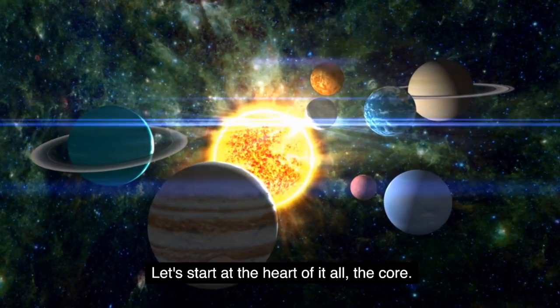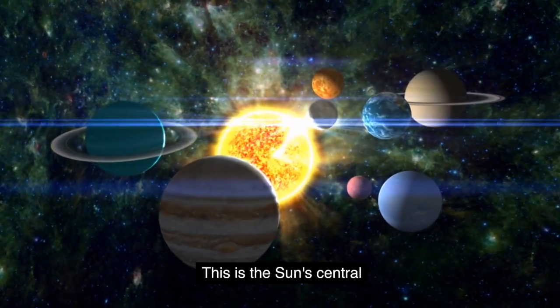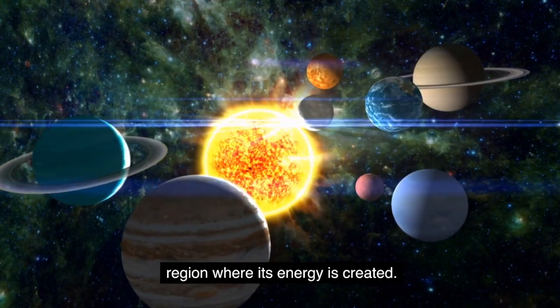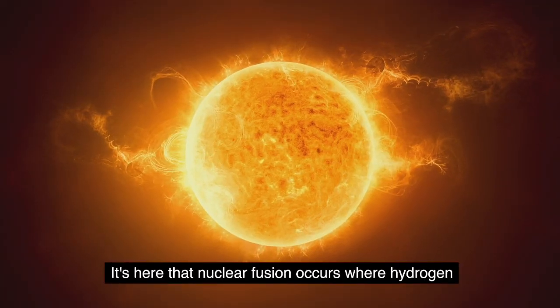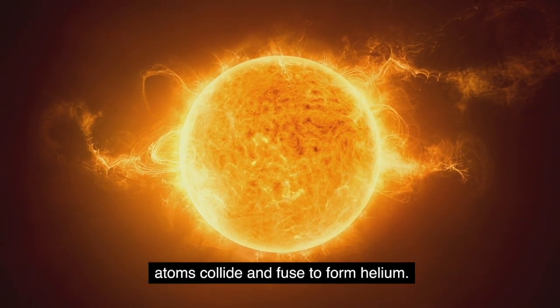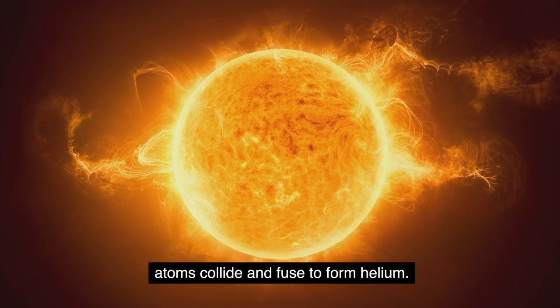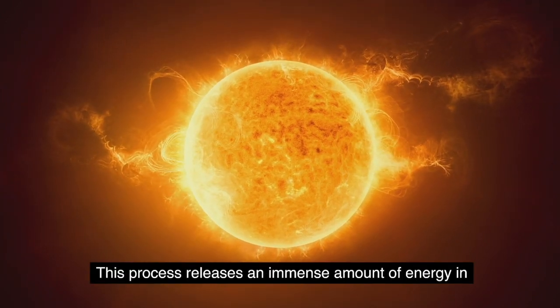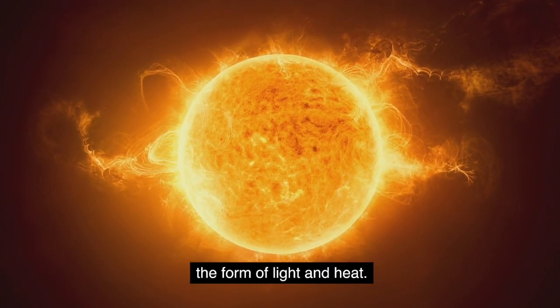This is the sun's central region where its energy is created. It's here that nuclear fusion occurs, where hydrogen atoms collide and fuse to form helium. This process releases an immense amount of energy in the form of light and heat. Now, moving outward we have the photosphere.